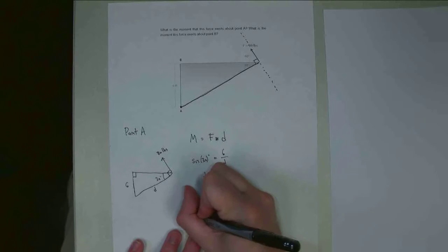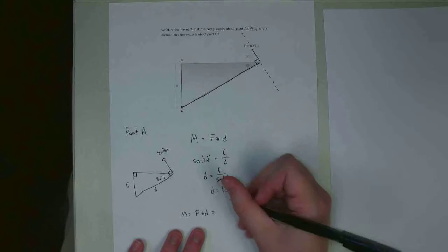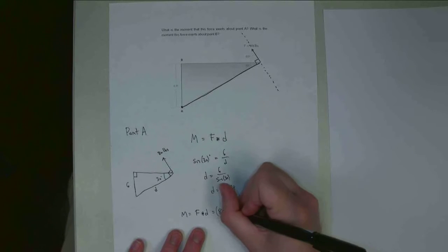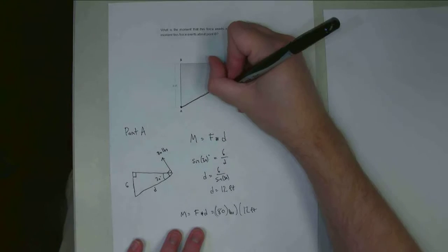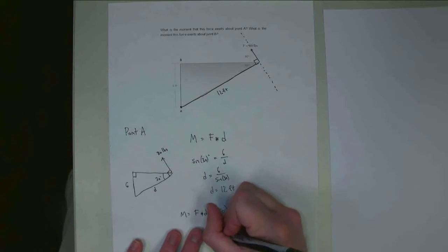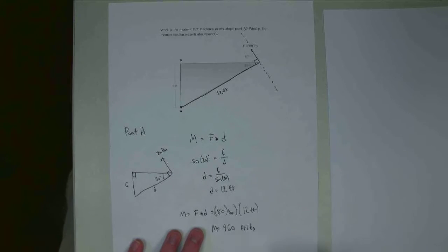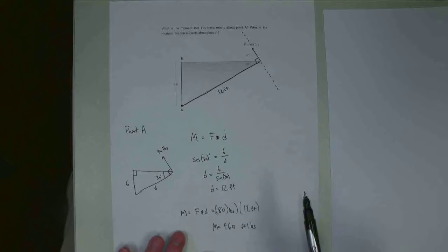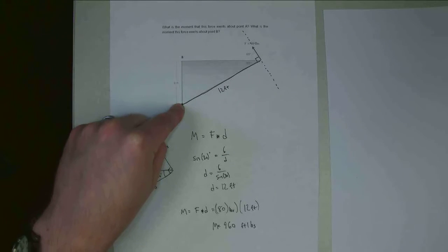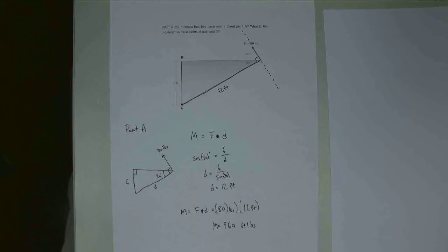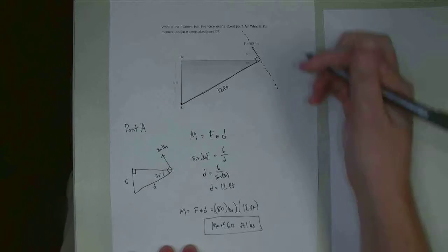Moment equals force times distance, which is going to be 80 pounds times 12 feet, giving us 960 foot-pounds. I need to use intuition for the sign: if I were holding down point A and this force is rotating it, the whole thing would rotate counterclockwise about point A. Counterclockwise rotation is positive, so I'm going to leave that as a positive moment. That is the moment this force exerts about point A.